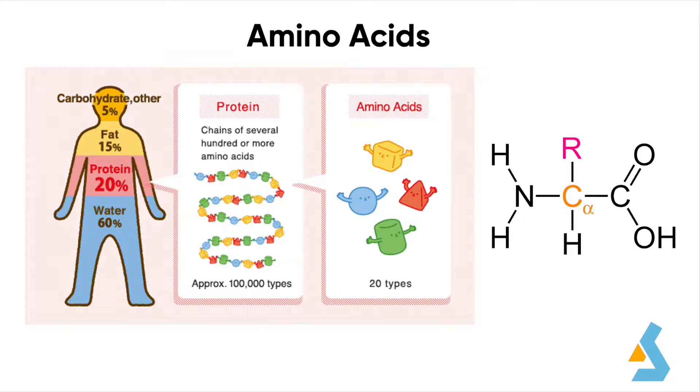Protein is the second most abundant compound in the body, following water. The proteins in our body contain 20 different types of amino acids, which are known as alpha amino acids.